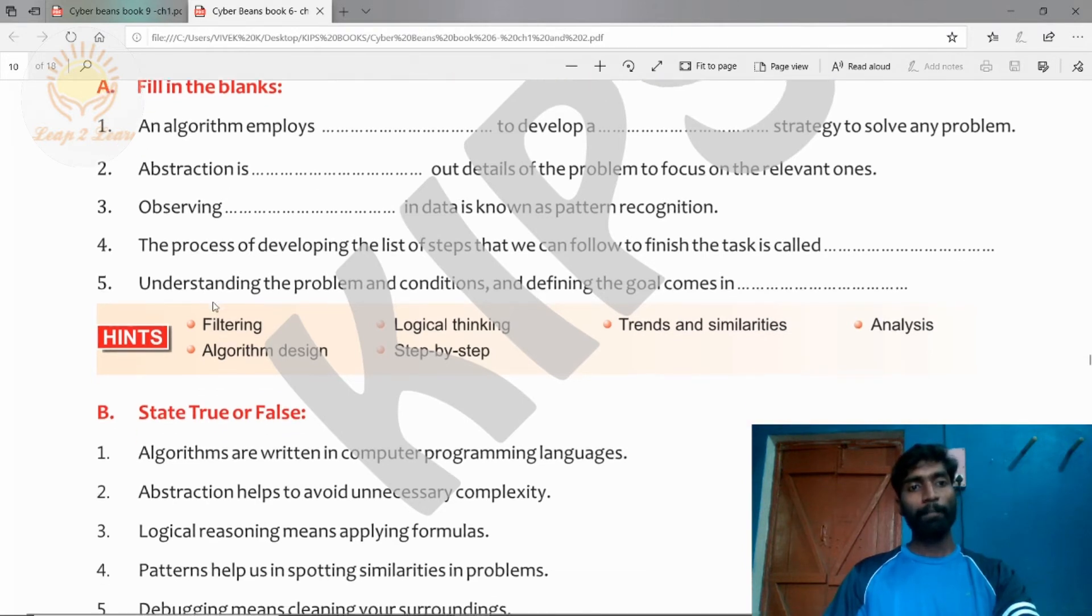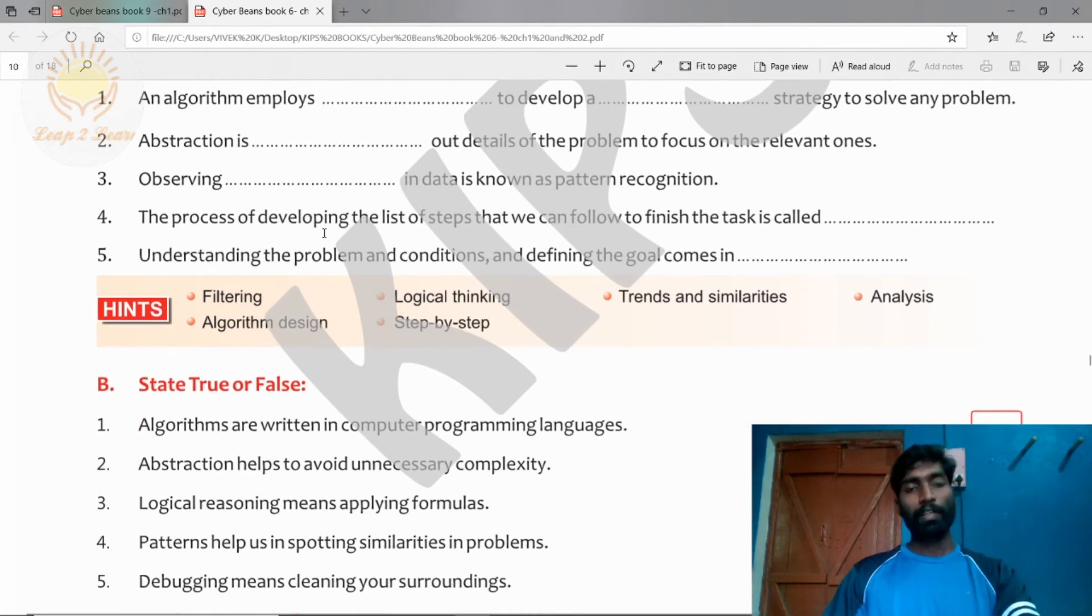Fourth question: the process of developing the list of steps that we can follow to finish the task is called algorithm design. When there is a process step-by-step, algorithm designing will come.